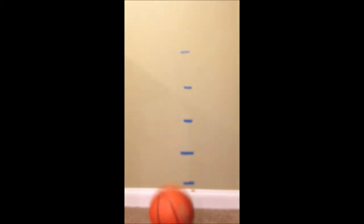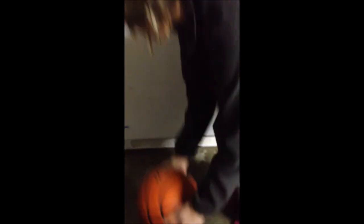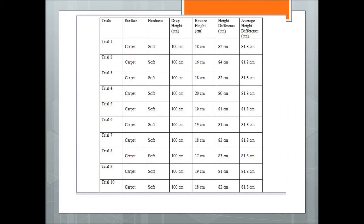Here are some examples of just the different types of trials. These are the research charts that you fill out after you have completed all of your trials. Fill out the surface, the hardness, the drop height, the bounce height, the height difference, and then the average height difference for each of the surfaces.